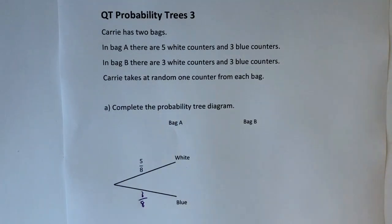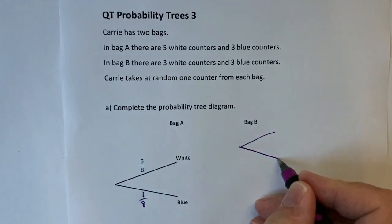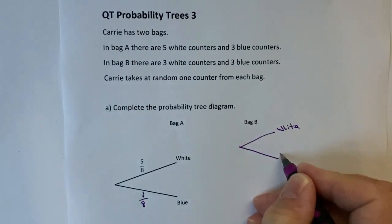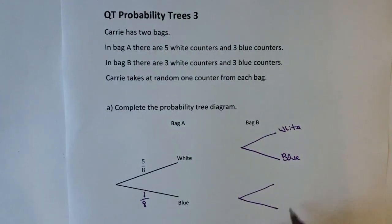Let's have a look at what happens in bag B. Because this is a probability tree we need to duplicate the information. So we're going to look at white and blue, and it is helpful to draw these in the same order each time.